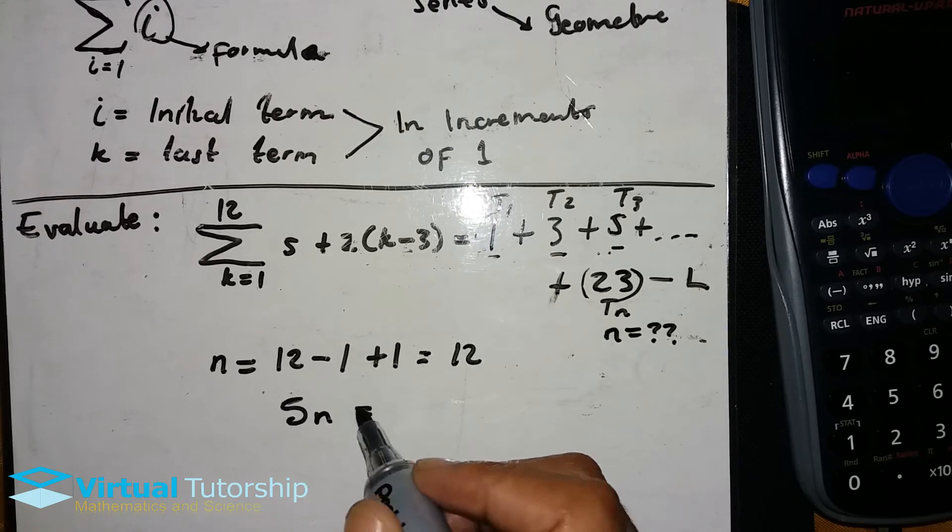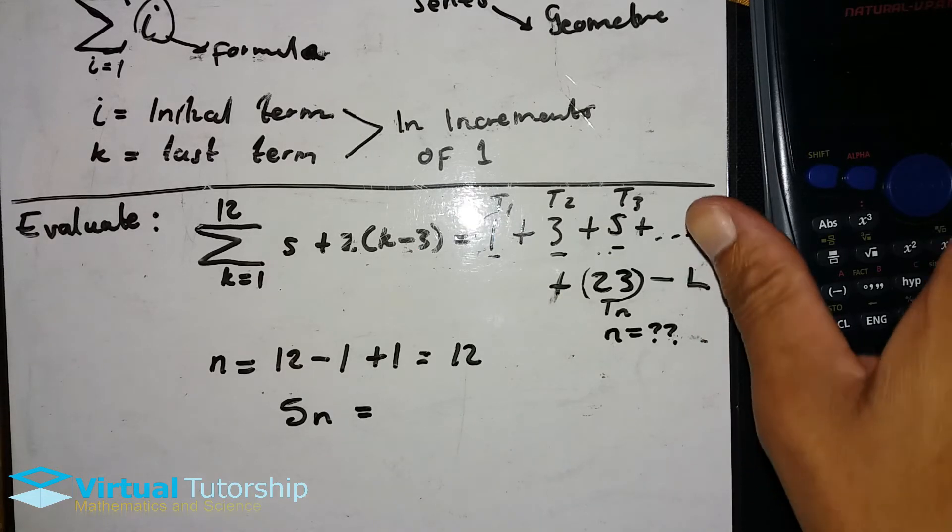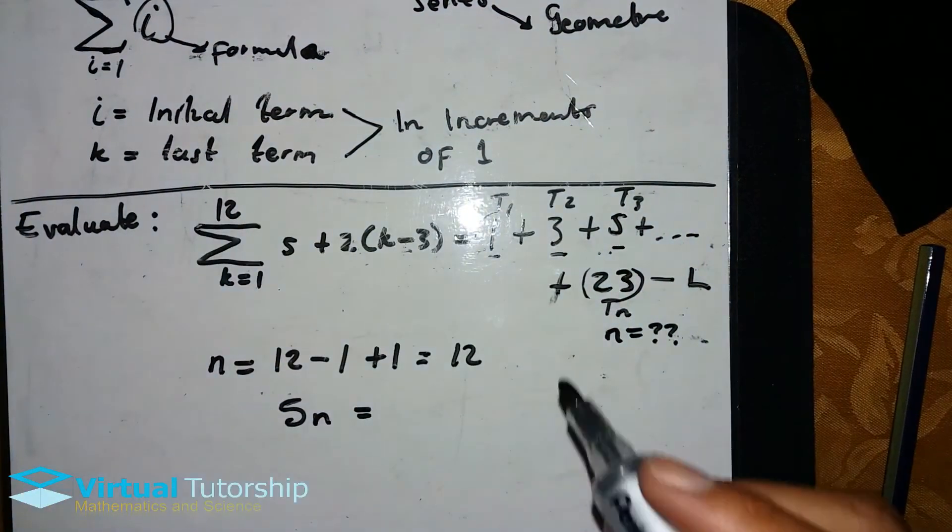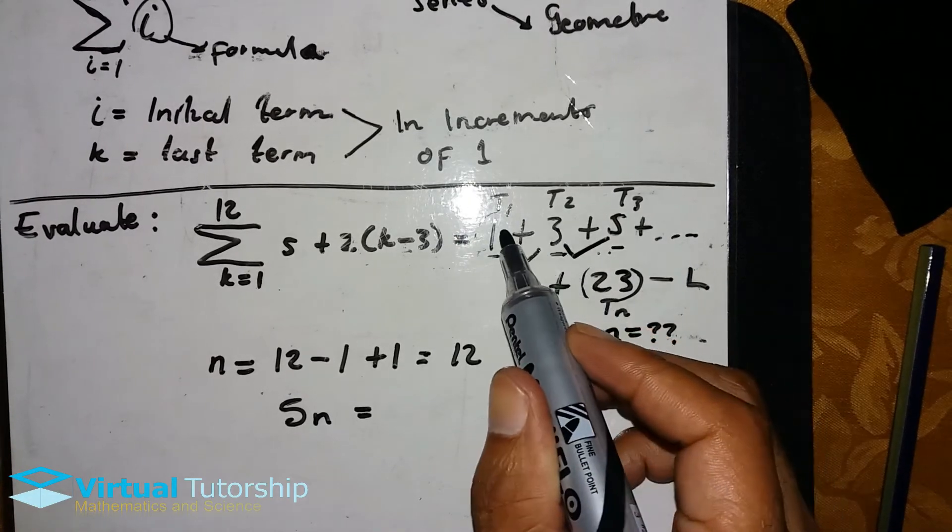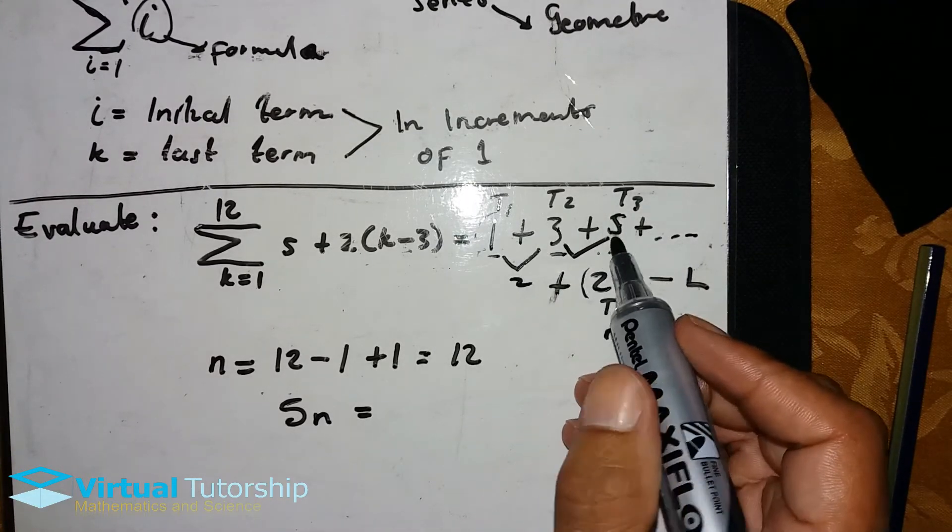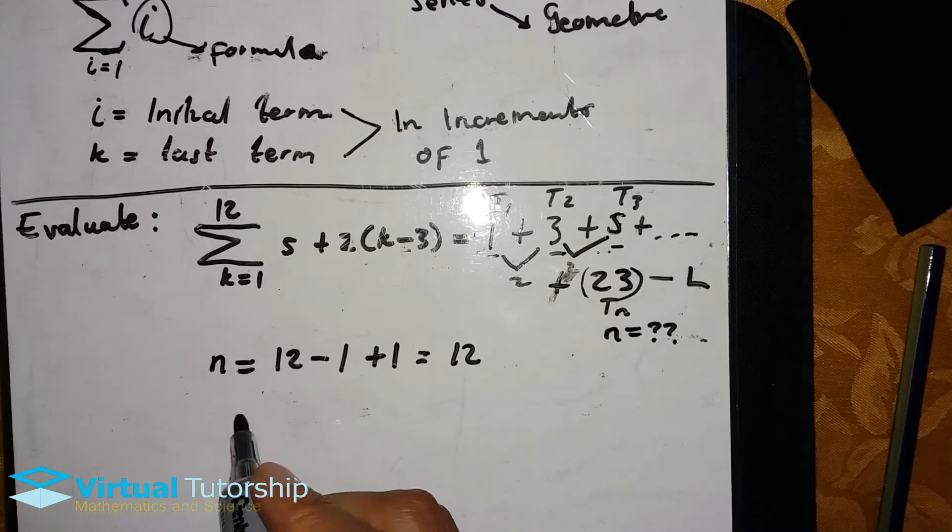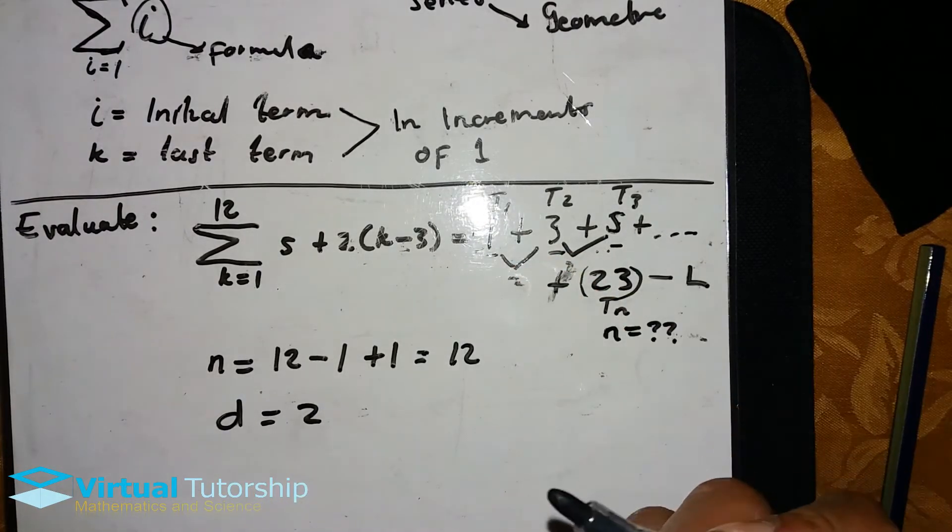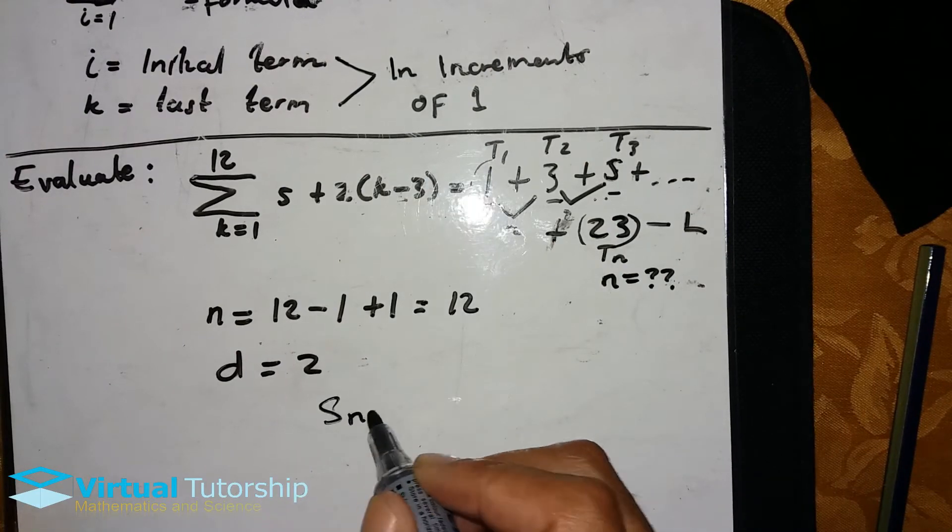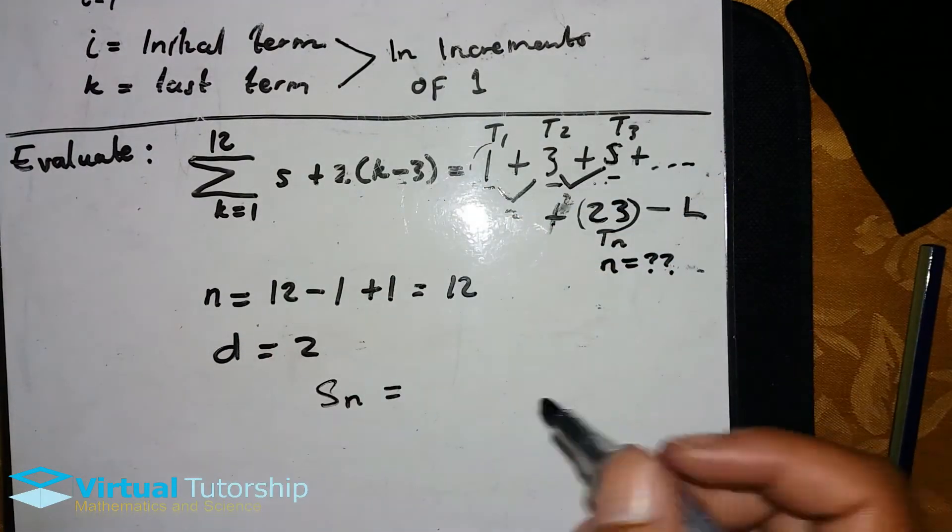In order to evaluate this, we need to see what kind of formula, what kind of series we have. This one—it's an arithmetic sequence. Why? T2 minus T1 is 5 minus 3, which is 2. T3 minus T2 is also 2. So the common difference is equal to 2, so this is an arithmetic sequence.